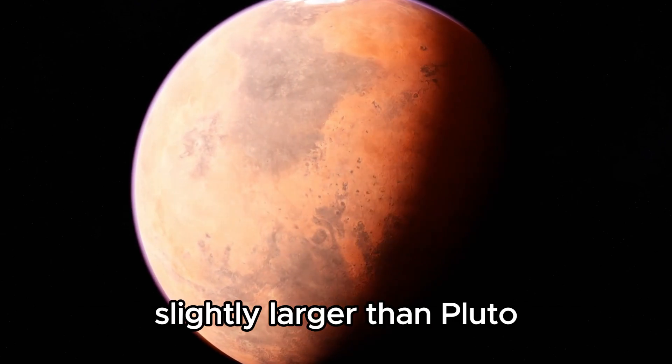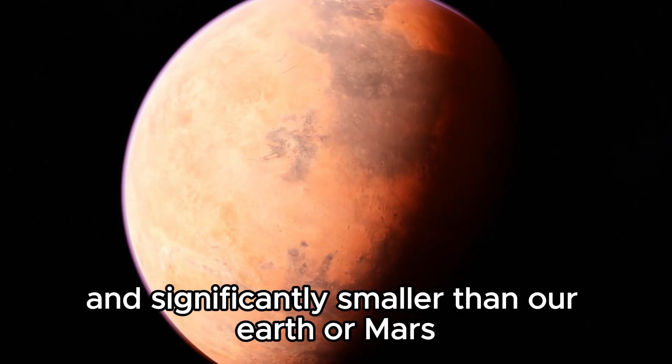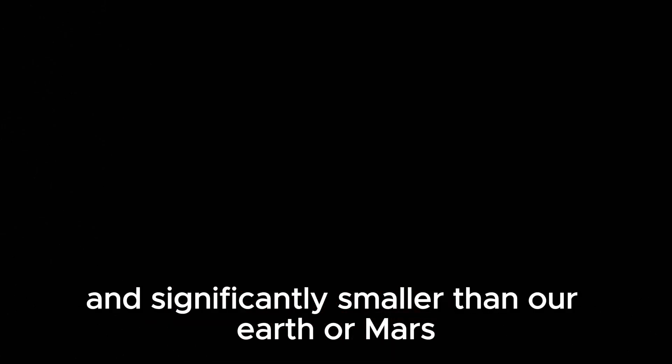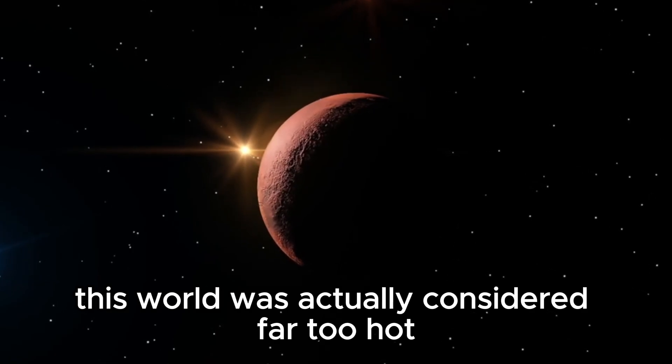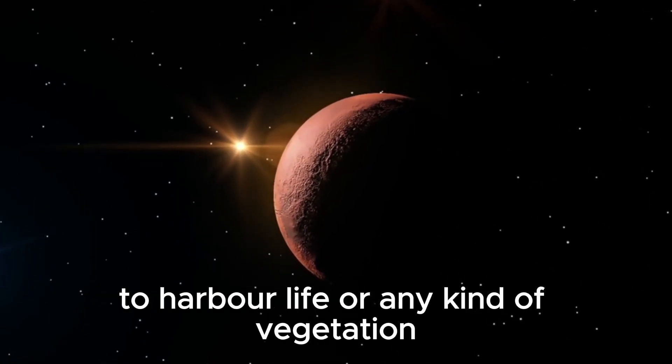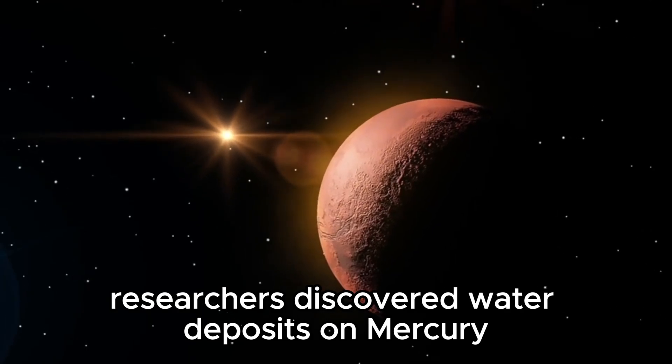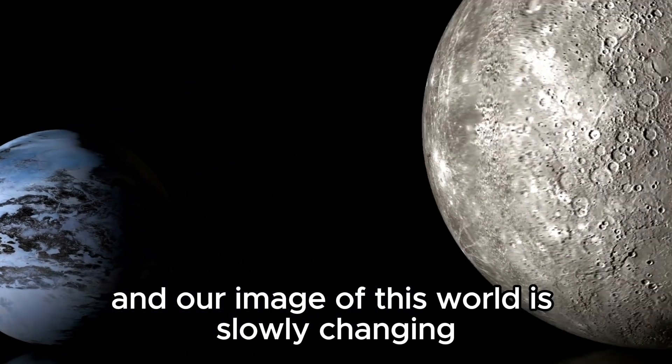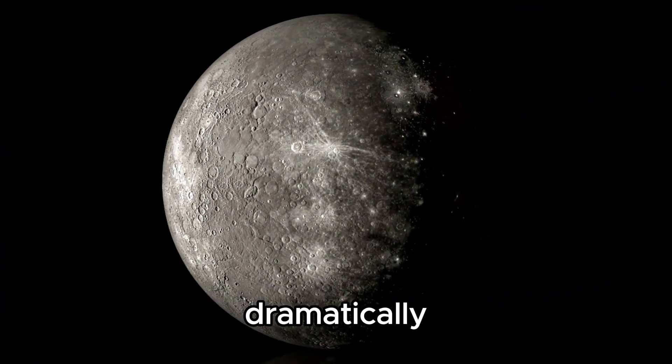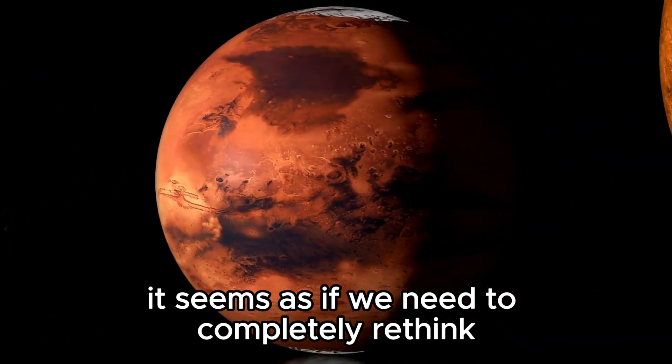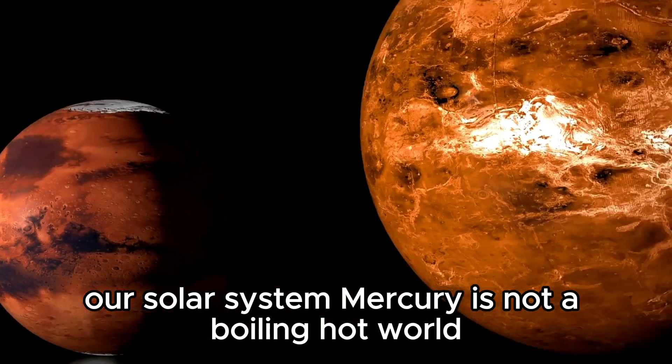Mercury is a rocky planet slightly larger than Pluto and significantly smaller than our Earth or Mars. This world was actually considered far too hot to harbor life or any kind of vegetation. But then researchers discovered water deposits on Mercury, and our image of this world is changing dramatically. It seems as if we need to completely rethink our solar system.